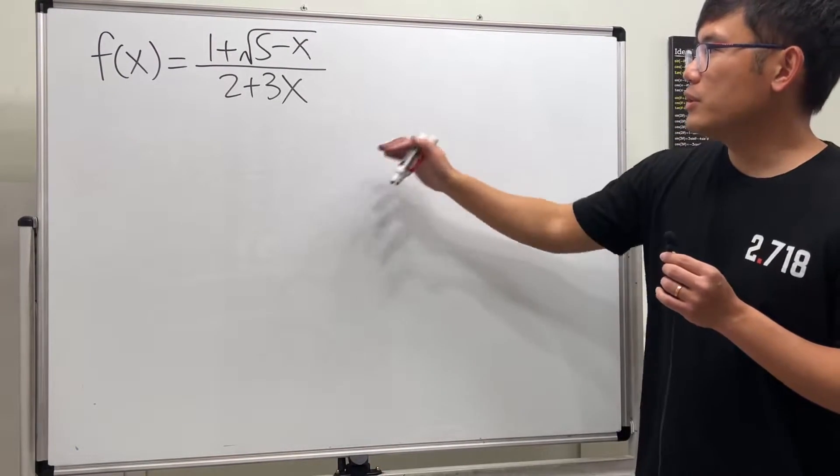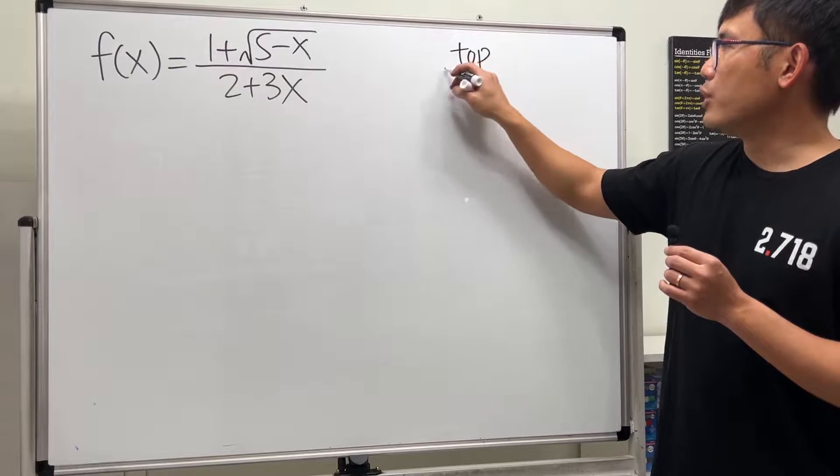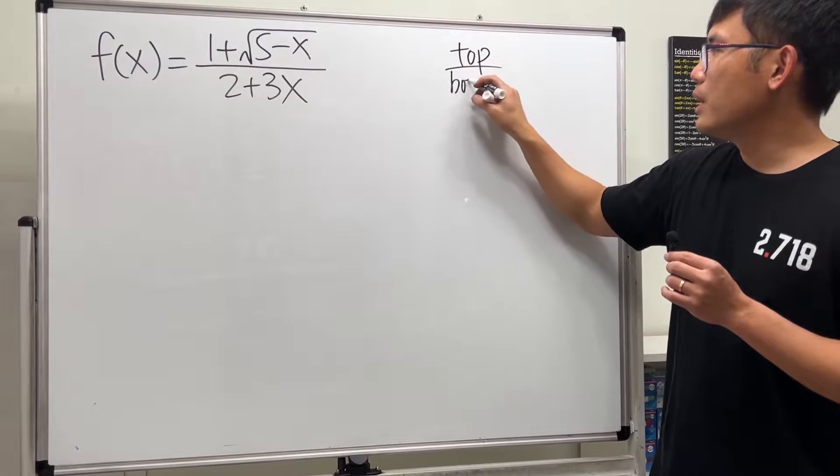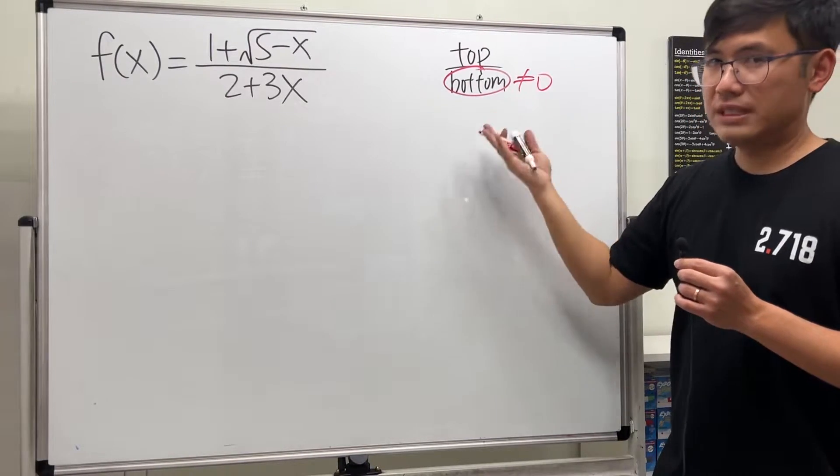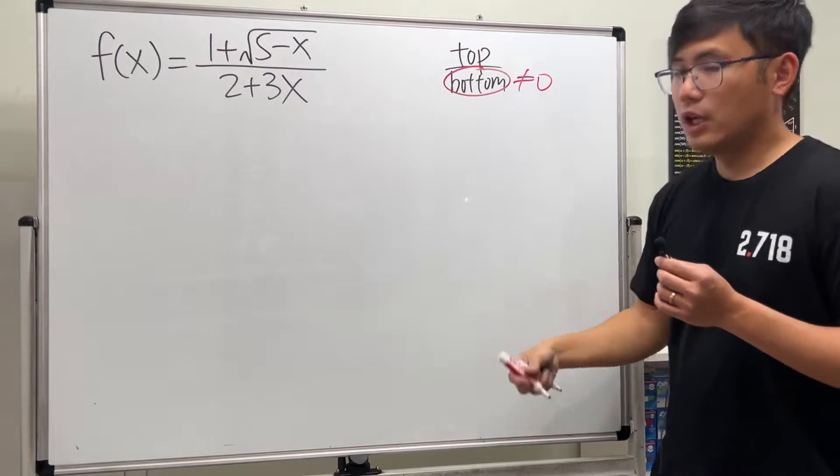Let me write this down for you. Whenever we have an expression top over bottom, we have to make sure that the bottom is not equal to zero. That's a condition because otherwise we're dividing by zero.